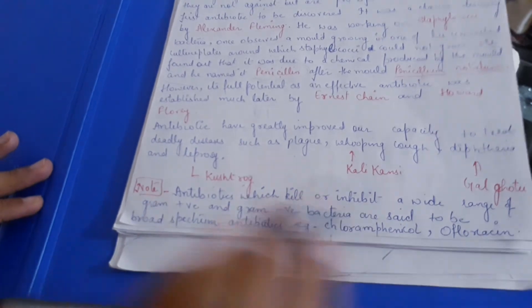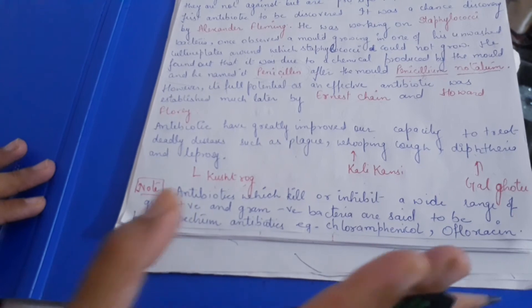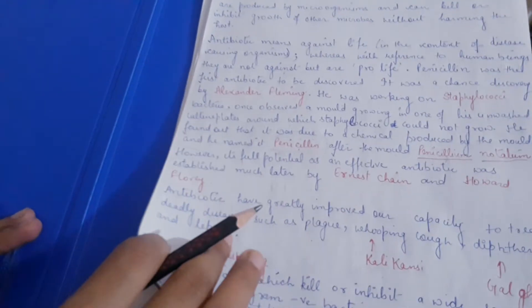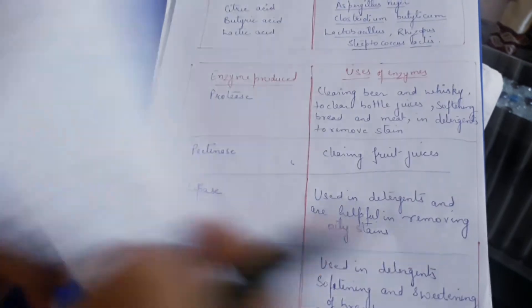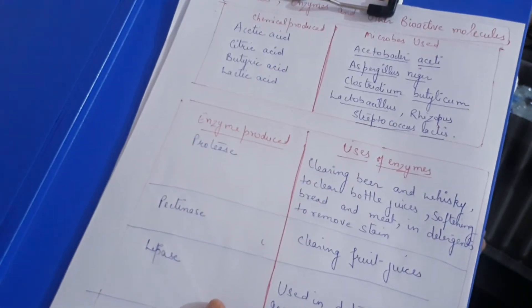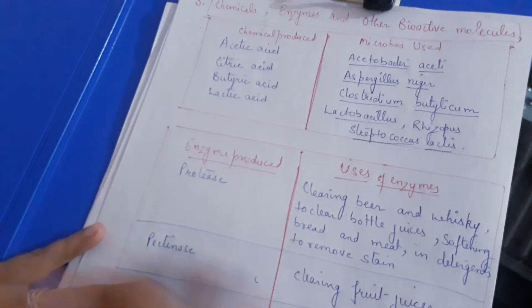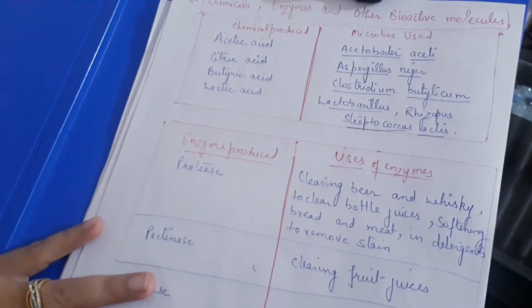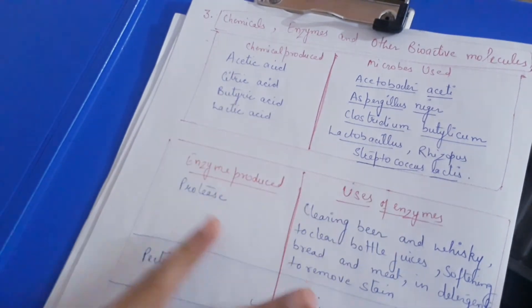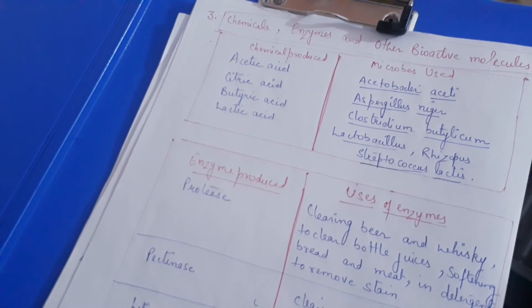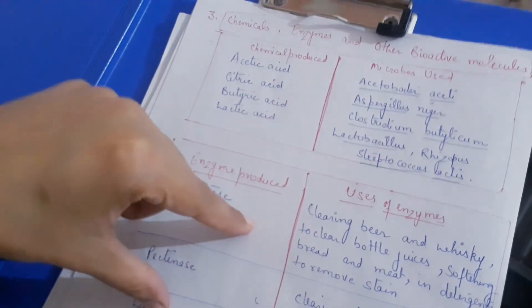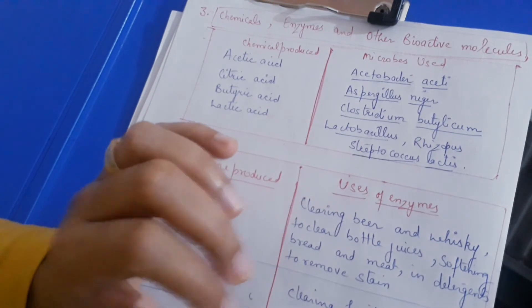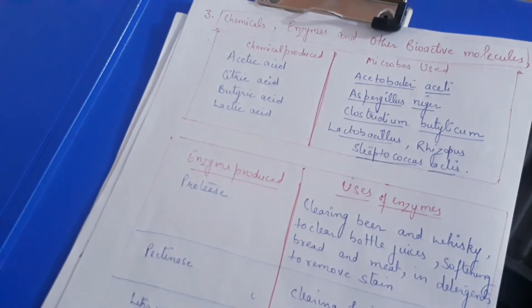So these microorganisms are helpful in preparing antibiotics. To summarize the industrial level use: first we have alcoholic beverages with their reactions, then we have chemicals, then antibiotics — with the specific example of Penicillium notatum producing penicillin, which kills various disease-causing bacteria like Staphylococcus.